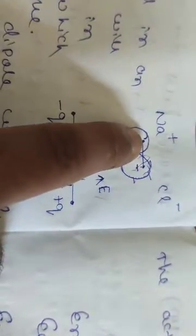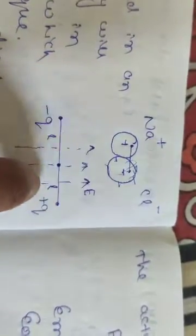This figure is like this: this is minus Q, this is plus Q, and there is a distance between them. This is the midpoint, and from the midpoint this distance is L on each side. So the total distance is L plus L, equal to 2L.